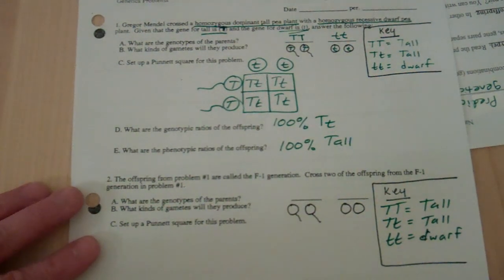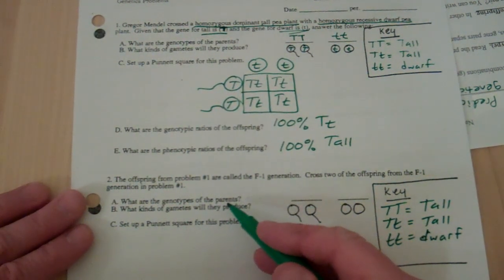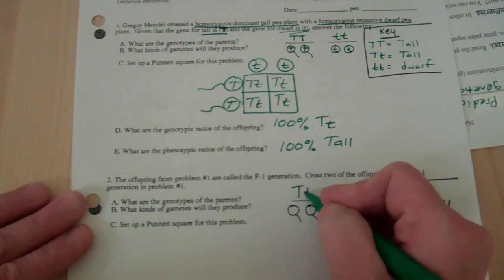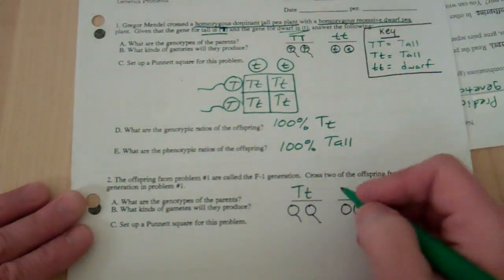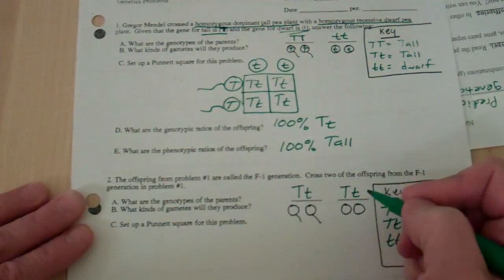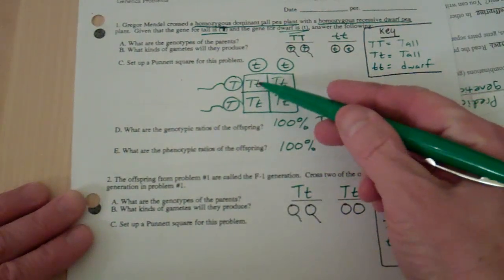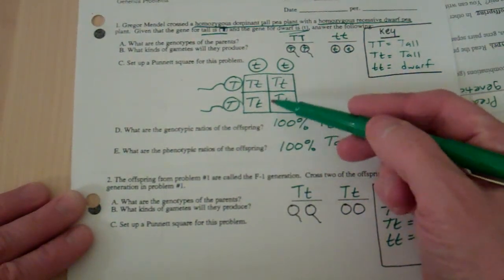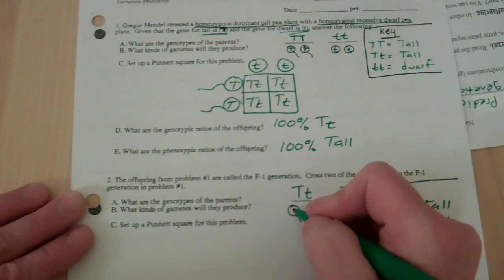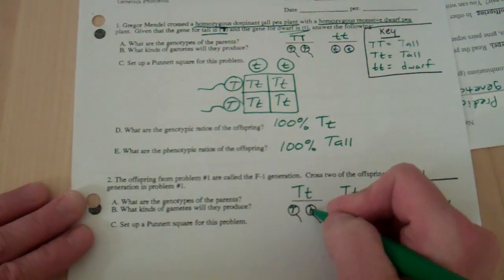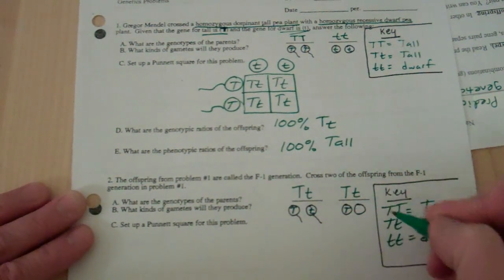Now I'm going to do the genotypes of my parents. I got this one from up here and I'm going to get the other one from up there. All of the offspring are big T little t, that's why we're doing this problem this way. What kind of gametes can they make? Big T gametes, little t gametes, big T gametes, little t gametes.